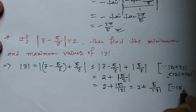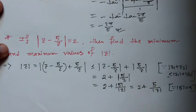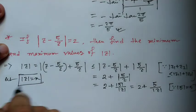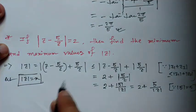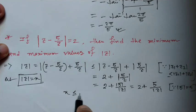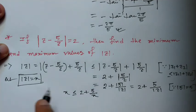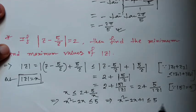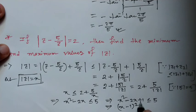Let mod z equal to x. From this we get x less than or equal to 2 plus 5/x. This implies x squared minus 2x is less than or equal to 5, which implies x squared minus 2x plus 1 is less than or equal to 6, so (x minus 1) squared is less than or equal to 6.